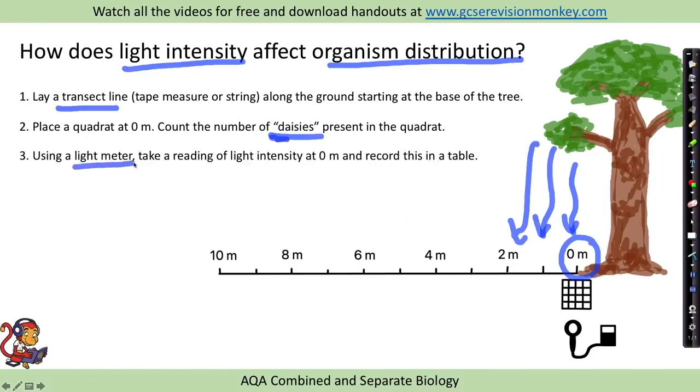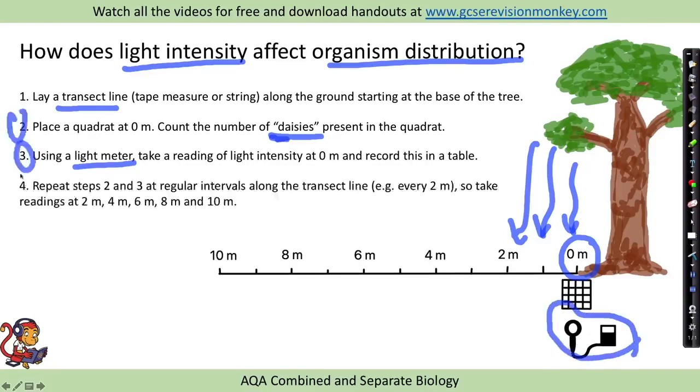We would use a light meter to take a recording of the light intensity and record this in a table. We then repeat steps two and three at regular intervals along the transect line, for example, every two metres.